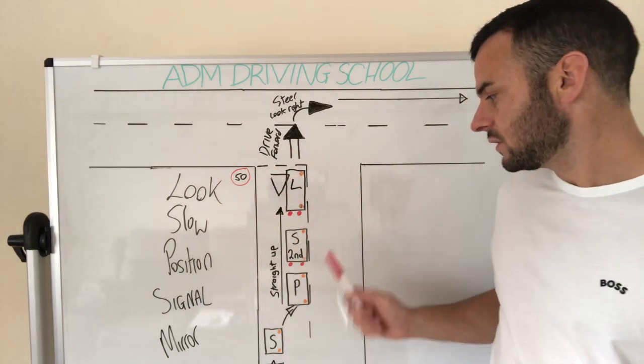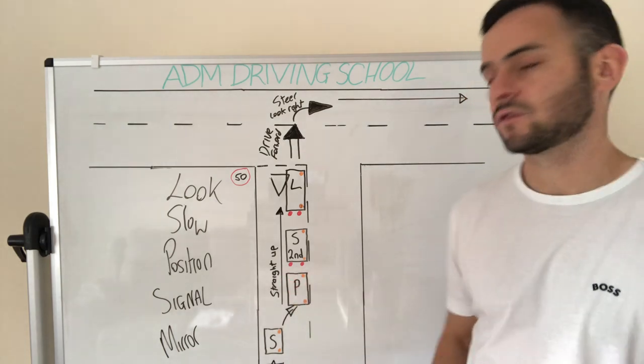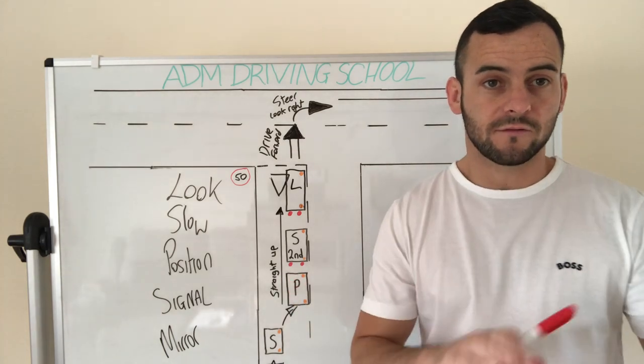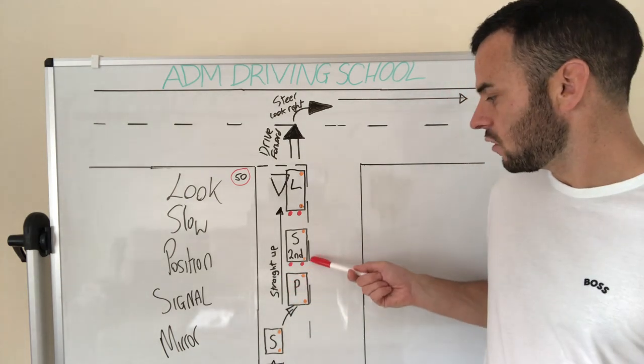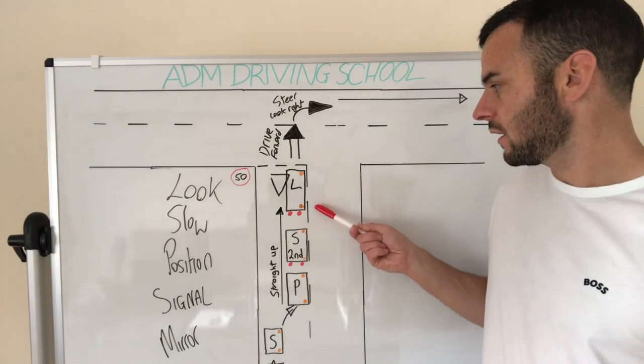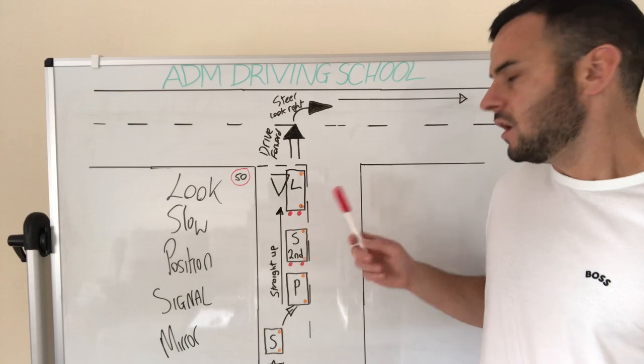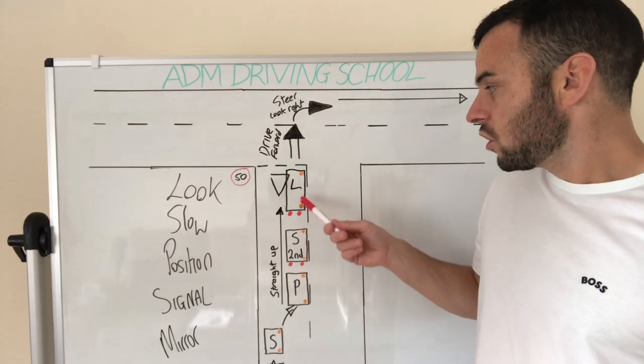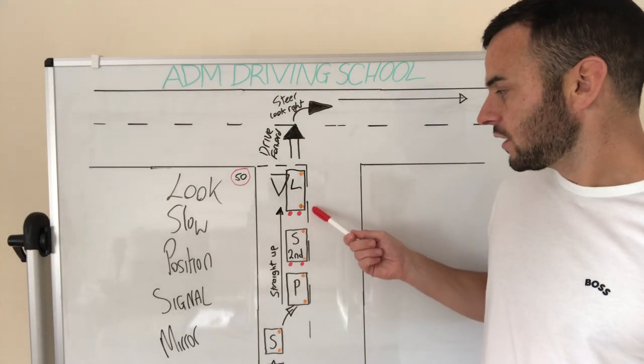Once you're in position you can see the brake lights, slow with the brake first. Once you're going slow enough that's when we clutch in, into second, off the clutch and L for luck. Now although we're coming up L for luck we'd still be on the brake here.